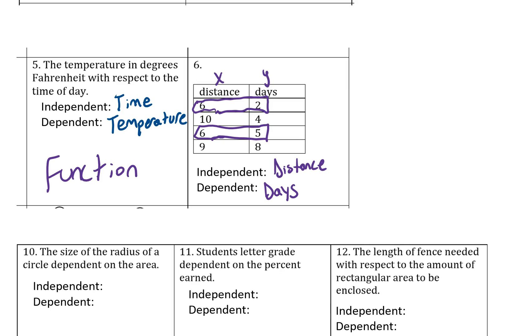So that means this is not a function because we have one X, one single X value of six going to multiple Y's. And that can't happen with a function.